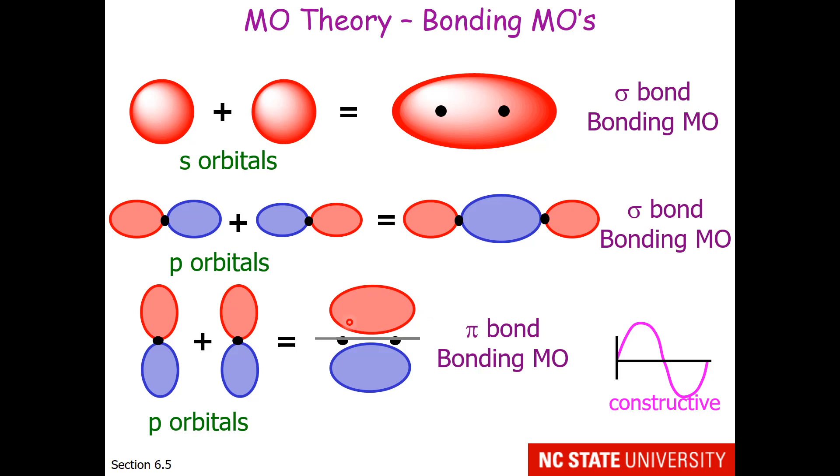We get constructive interaction with an electron probability region that can be above or below the nodal plane. Once again, this is a bonding molecular orbital.